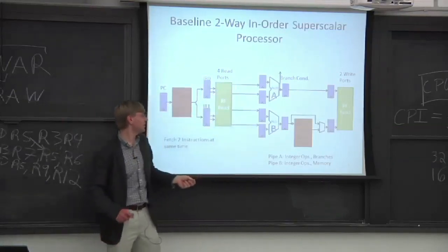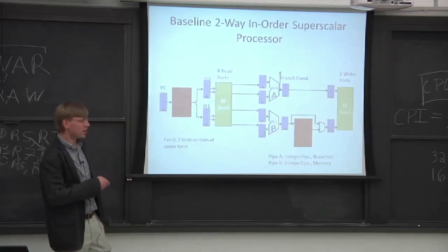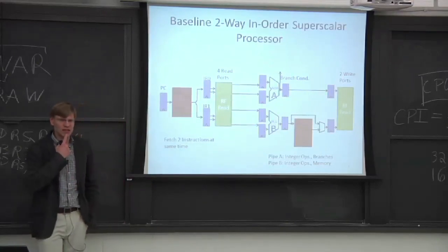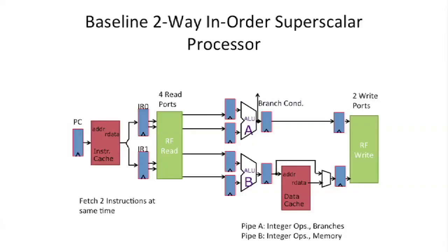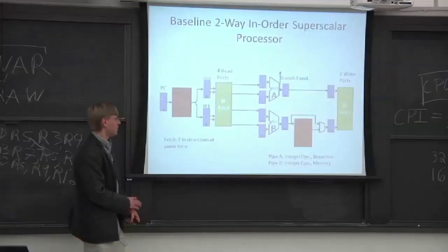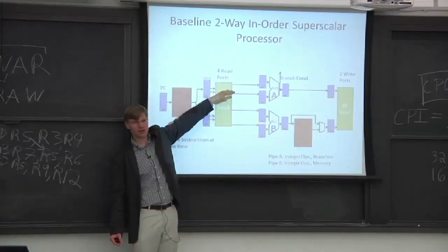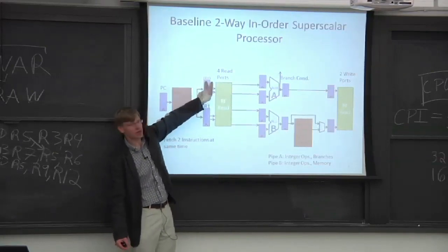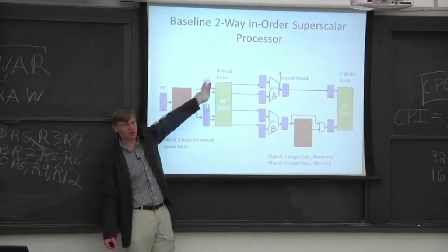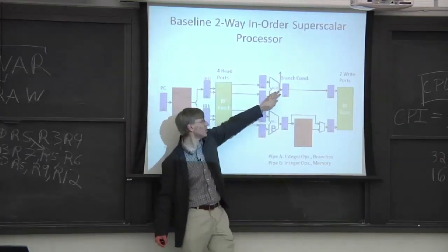In this next part here, our pipes are not symmetric. So is this good enough? So what happens if the first instruction that comes out here is a load? So instruction IR0 here, the instruction register, gets loaded with the bits from the load. What happens downstream here? Can the load happen here?